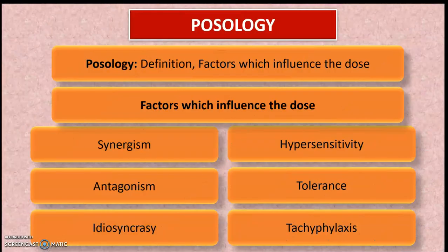The next chapter is Posology. Important points include the definition of posology and factors which influence the dose. There are a total of 16 factors influencing the dose, of which the most important for exams are synergism, antagonism, idiosyncrasy, hypersensitivity, tolerance, and tachyphylaxis. Child dose calculations are also integrated in this chapter and must be focused upon.